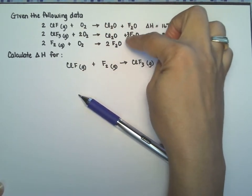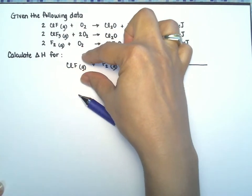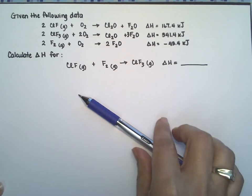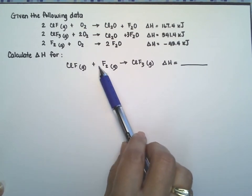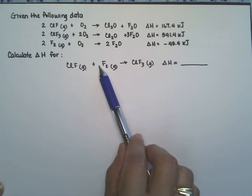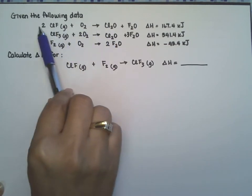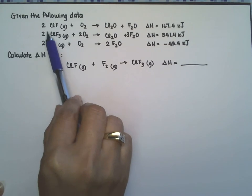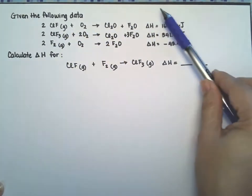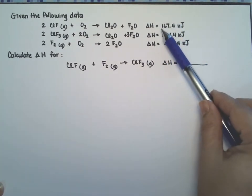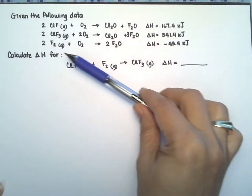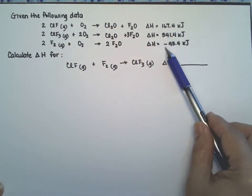Just by looking at it, the first thing that I notice is that all the coefficients of the equation they want us to calculate are ones, but here I see a lot of twos, so we're going to have to divide some of these equations by two. If you divide the equation by two, remember you have to divide the Delta H by two. If you reverse the equation, then you have to reverse the sign for the enthalpy as well.